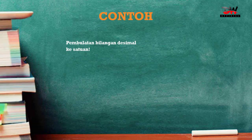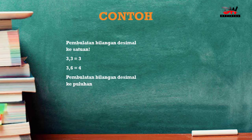Contoh pembulatan bilangan desimal ke satuan: 3,3 jika dibulatkan menjadi 3; 3,6 dibulatkan menjadi 4. Karena ini pembulatan ke satuan, maka hasilnya akan menjadi satuan. Berbeda lagi dengan pembulatan bilangan desimal ke puluhan. Jika ke puluhan, misalnya angka 11 dibulatkan menjadi 10. Jadi kalau ke puluhan itu ada 10, 20, 30, 40 sampai 90 — pokoknya yang belakangnya puluh.